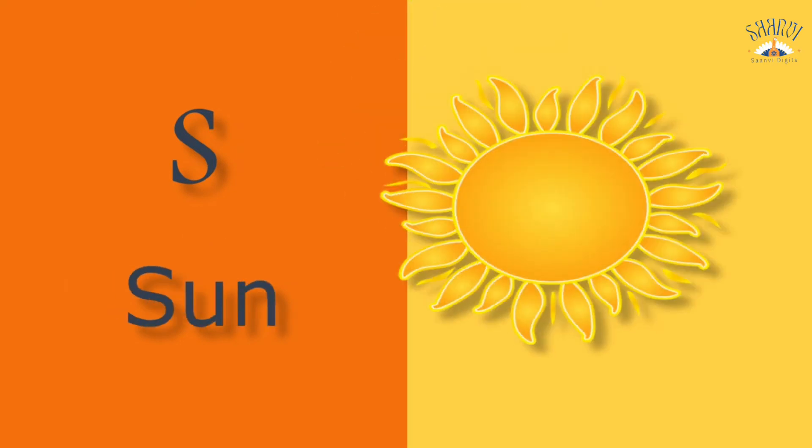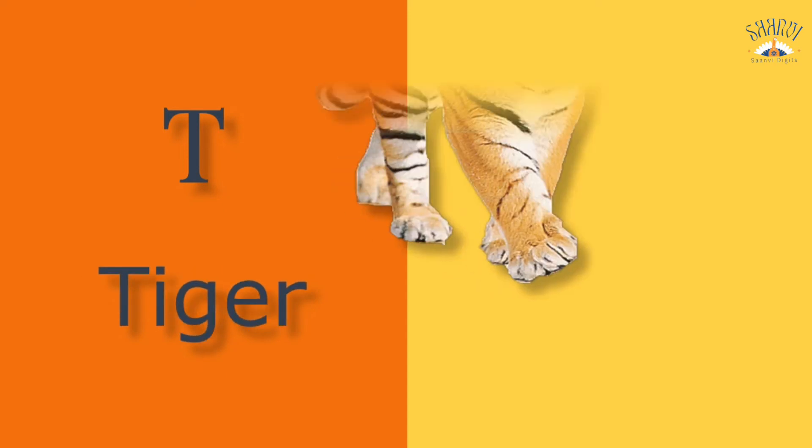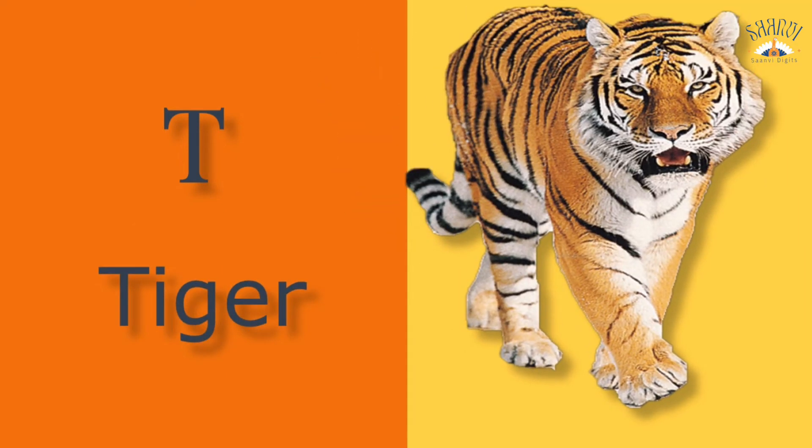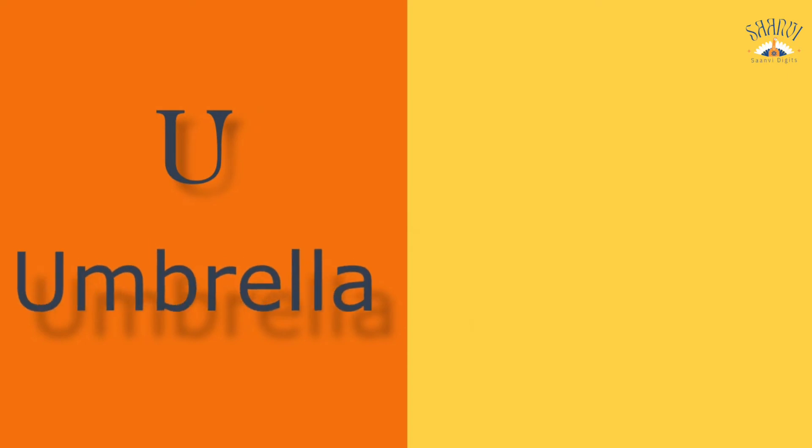S for sun. Sun means suraj. T for tiger. Tiger means bag. U for umbrella.